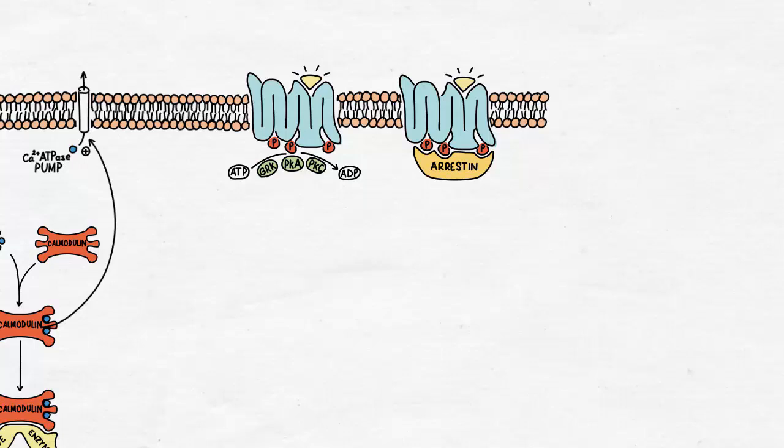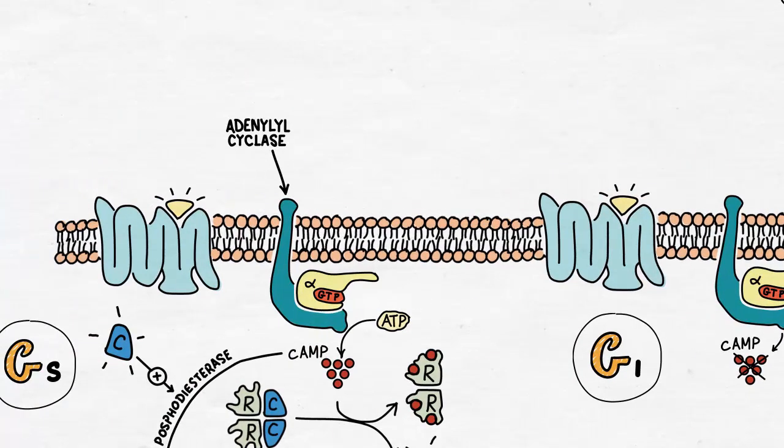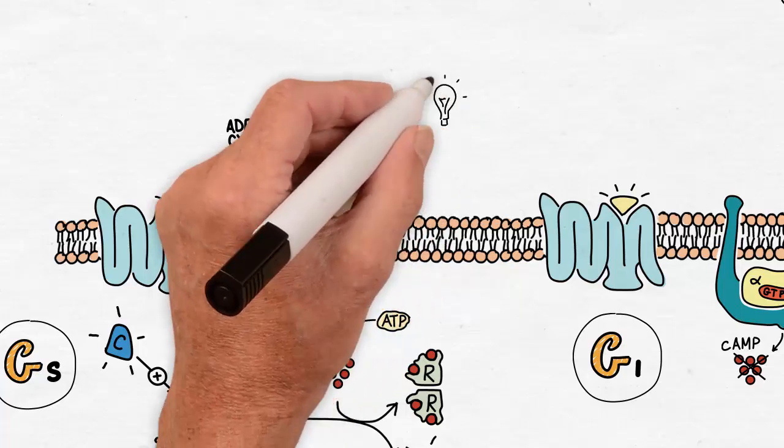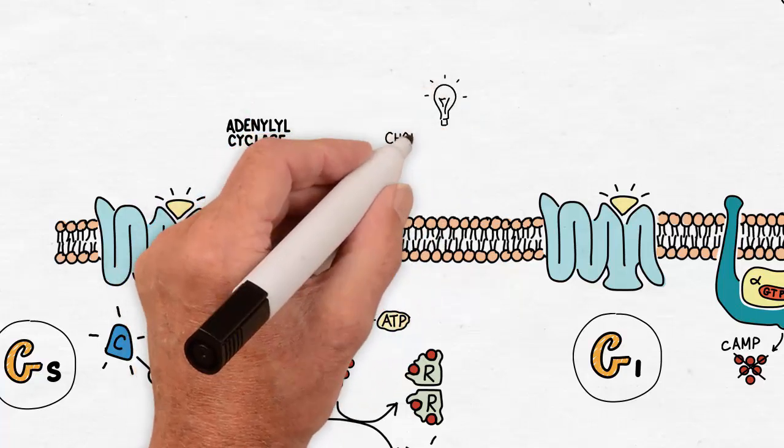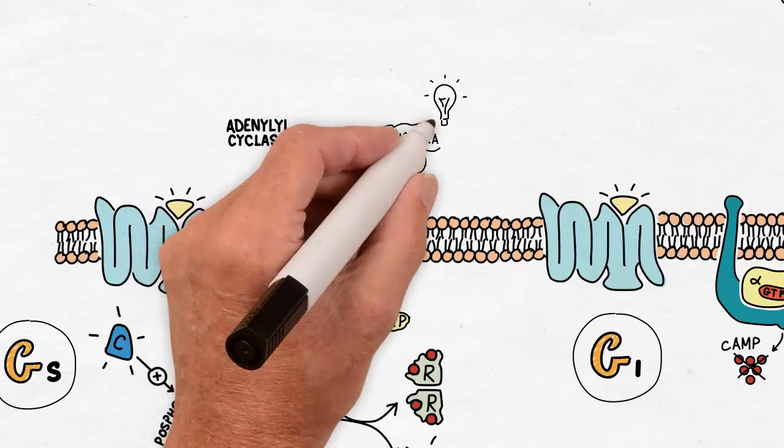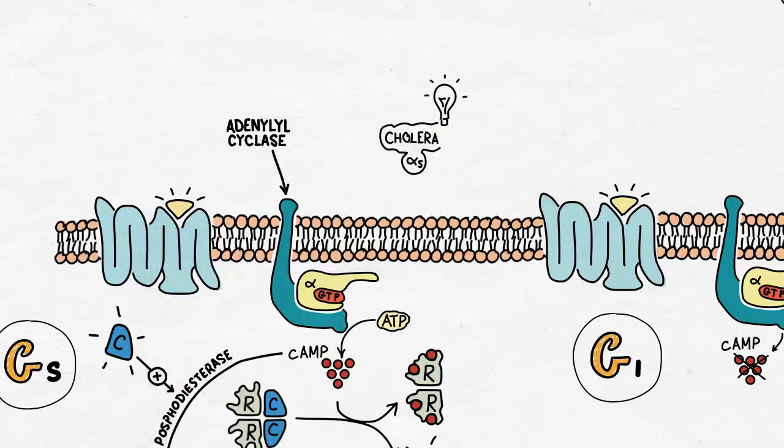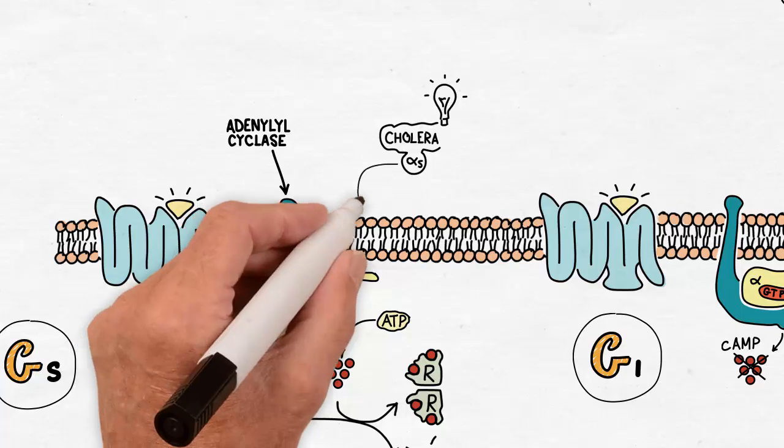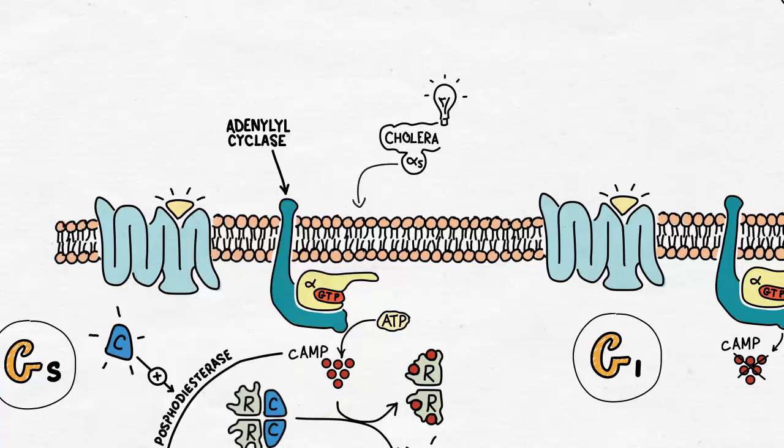A clinical correlate to this topic is that the cholera toxin produced by Vibrio cholerae bacteria alters the alpha-S subunit so that it can no longer hydrolyze its bound GTP, causing it to remain in an active state that activates adenylyl cyclase indefinitely. The resulting persistent elevation in cyclic AMP concentration causes a large efflux of chloride and water into the gut.